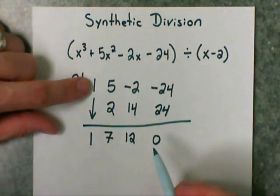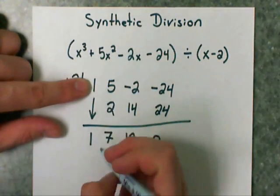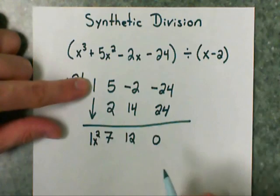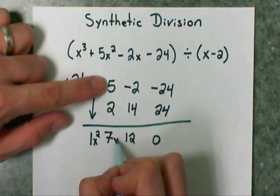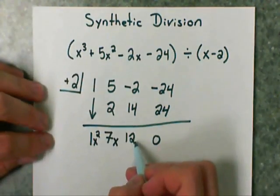Now, this first one up here meant x to the third power. Our answer is going to be 1 degree less, so this will be x squared. Likewise, this was an x squared, so 1 degree less would be the x. And this was an x, so 1 degree less would be our constant 12.